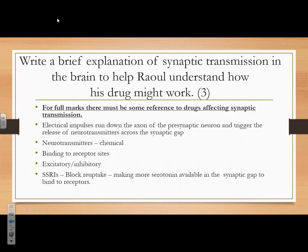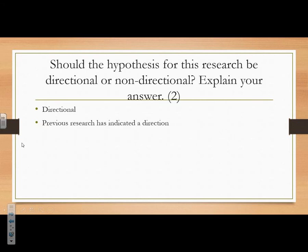Brief explanation of synaptic transmission — hopefully what we did on Monday cleared that up. An electrical impulse runs down the axon of the pre-synaptic neuron and triggers the release of neurotransmitters across the synaptic gap. For full marks there must be some reference to drugs affecting synaptic transmission. Neurotransmitters are chemical; electrical impulses are the signals between neurons; they bind to receptor sites. You could talk about excitatory and inhibitory, and then SSRIs that block reuptake — making more serotonin available in the synaptic gap — and link that back to Raoul to help them understand what's happening.